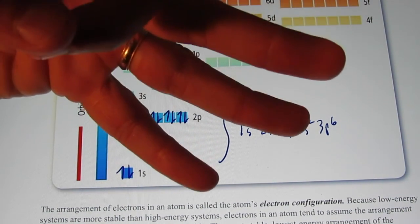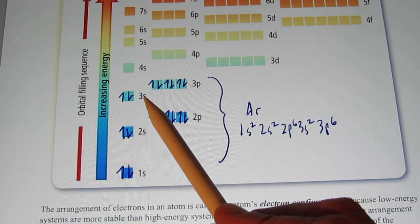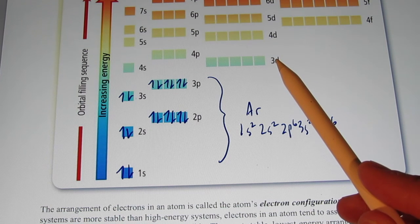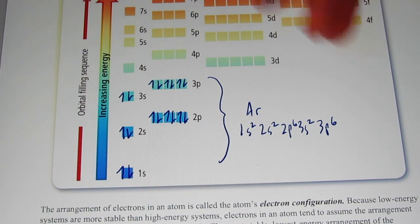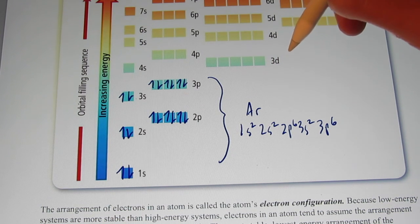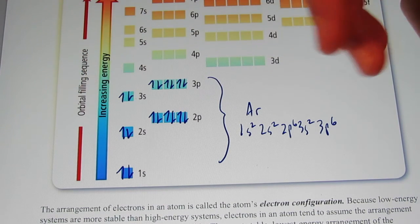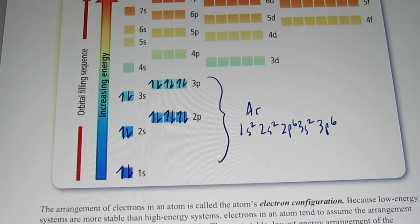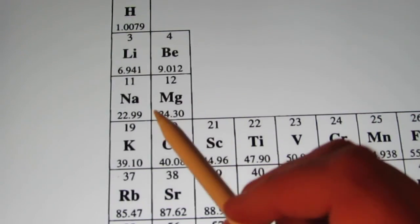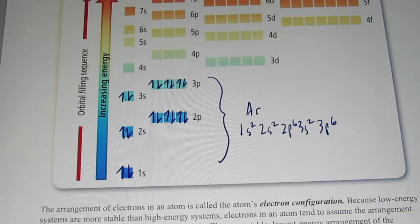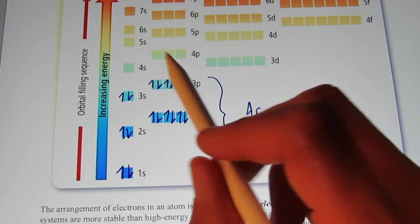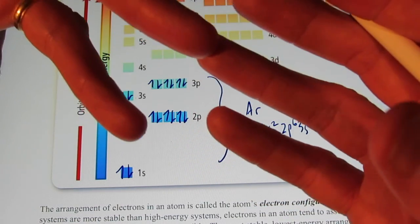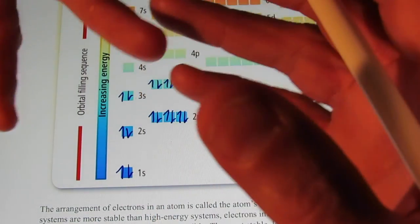Now the 3d ends up being an energy sublevel that has lots of energy — it's hard to make that wave pattern of a 3d. An s is a pretty easy wave pattern to make, however it's in the fourth energy level. So the problem is: where does that next electron go if I were to do the electron configuration for potassium with 19 electrons? Where would that 19th electron go? It could go to the 3d, or it could go to the 4s. The 3d is closer, but it's a harder wave to make. The 4s is farther away, but it's an easier wave to make.